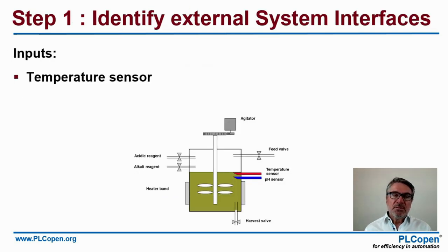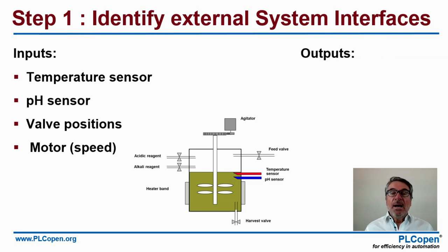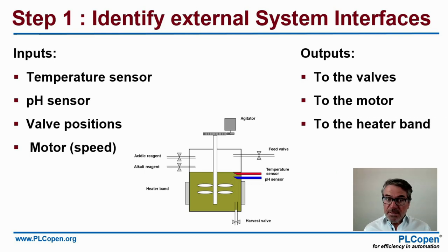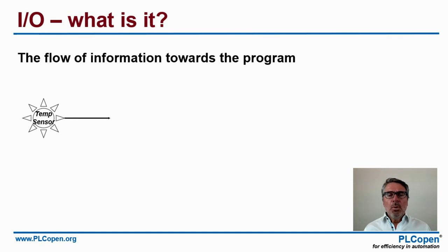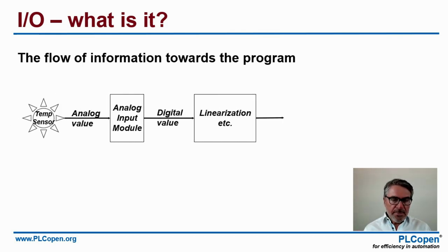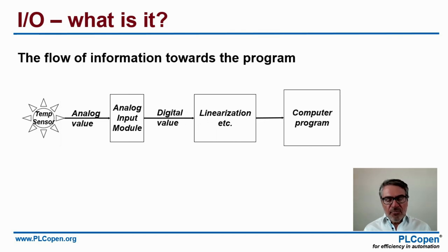That's where the seven steps come in. Step one: identify the external system interfaces — inputs and outputs. Inputs include the temperature sensor, pH sensor, and valve positions; outputs go to valves, the motor, and the heater vent. This is the flow of information: an analog value goes into an analog input module, is converted to a digital value, then undergoes delinearization before entering the program. With intelligent sensors on an IO bus via a communication module, the linearization may already be done, so the value feeds more directly into the computer program.